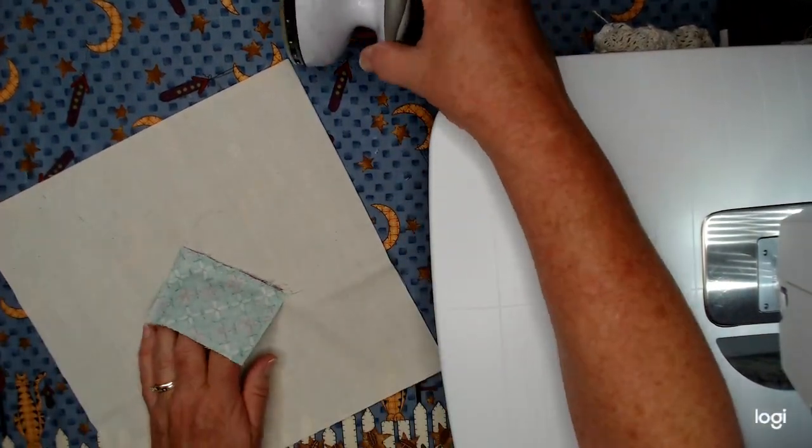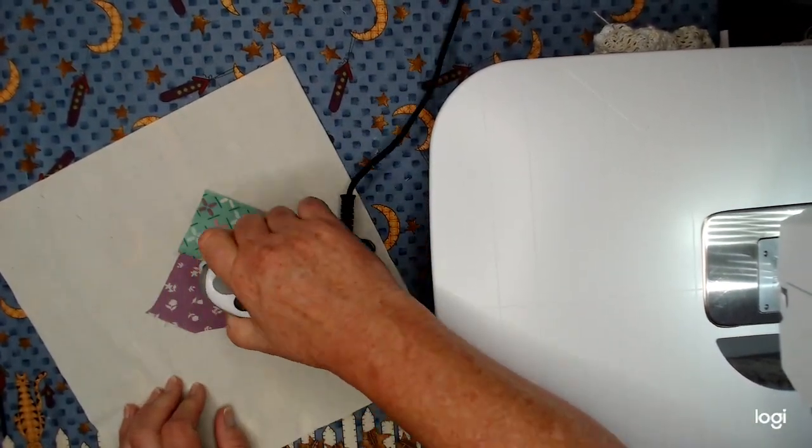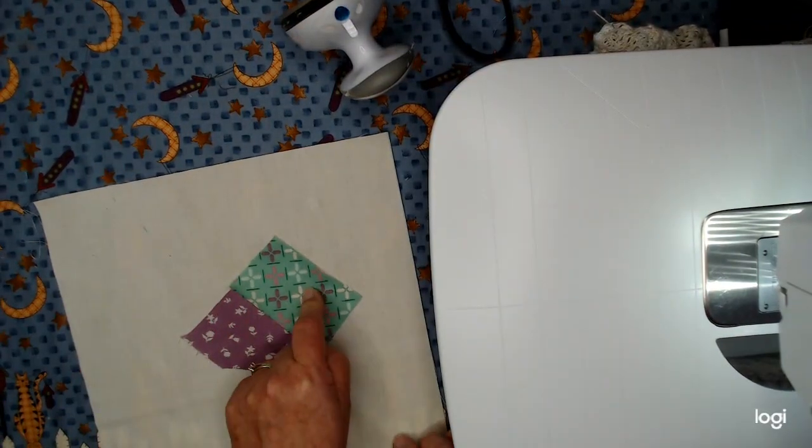So I've got my little iron on and I am going to flip that right side out and I'm going to iron that seam down. So we did that one.